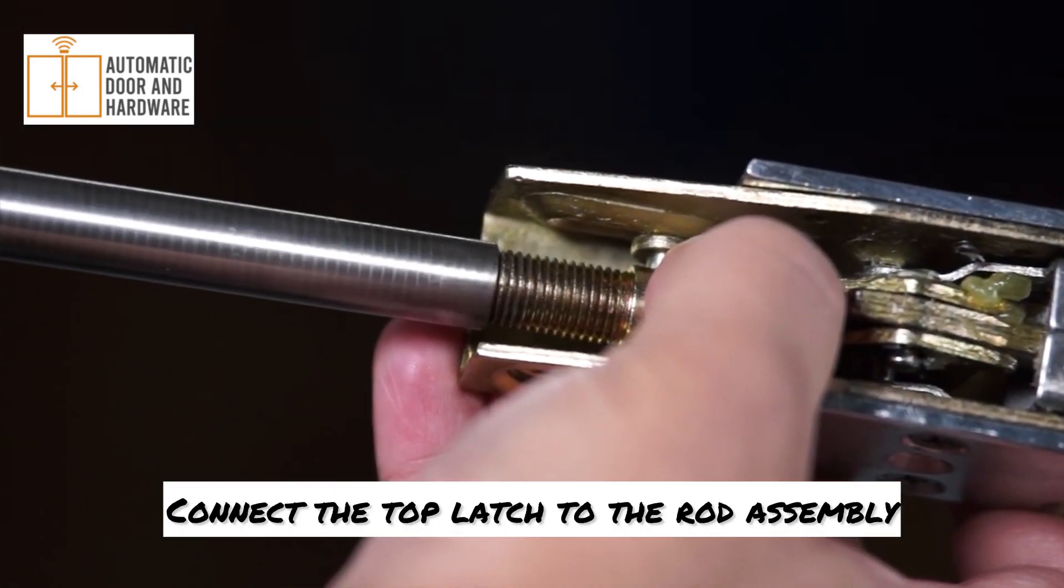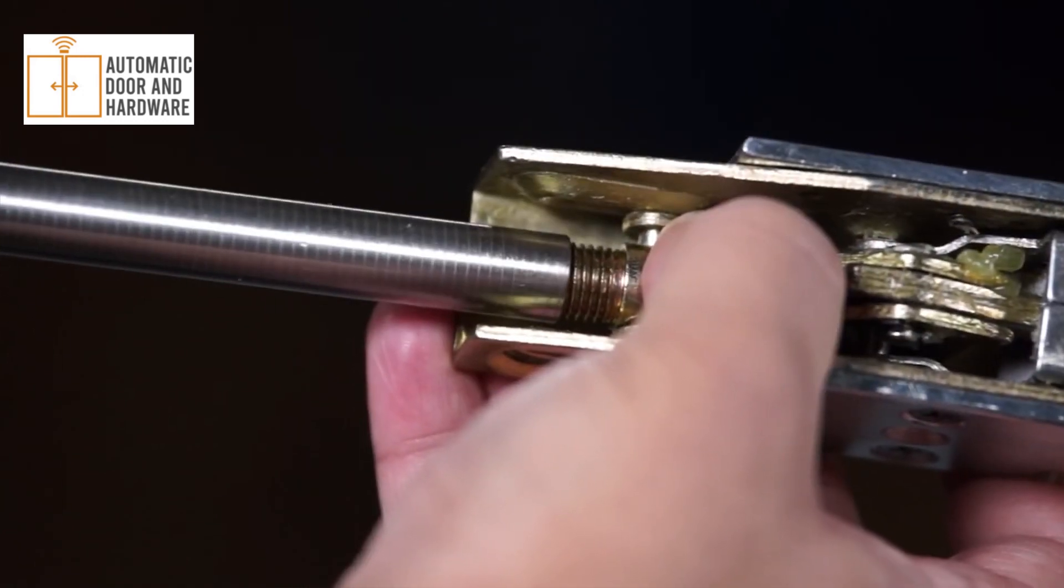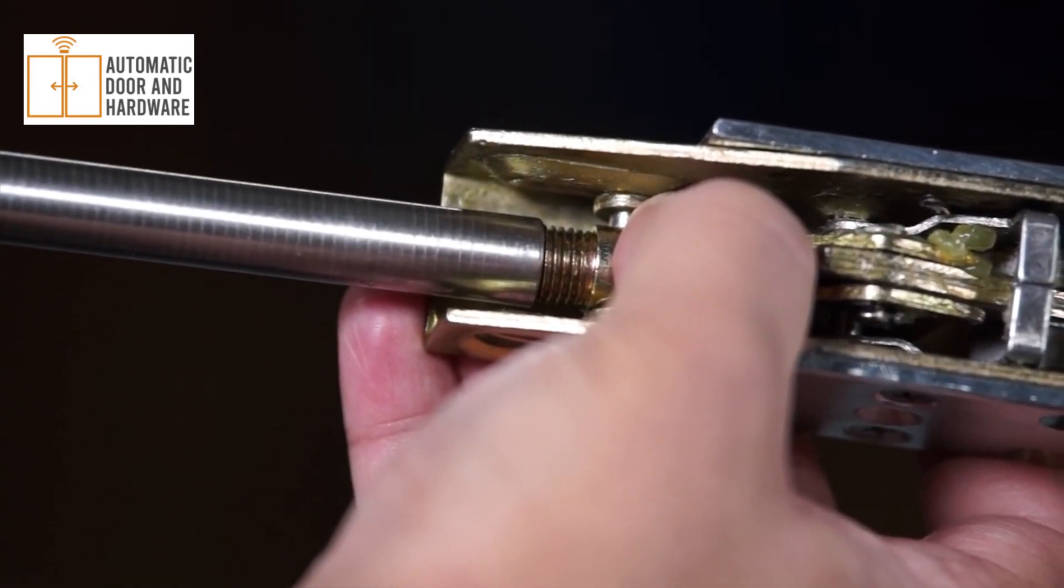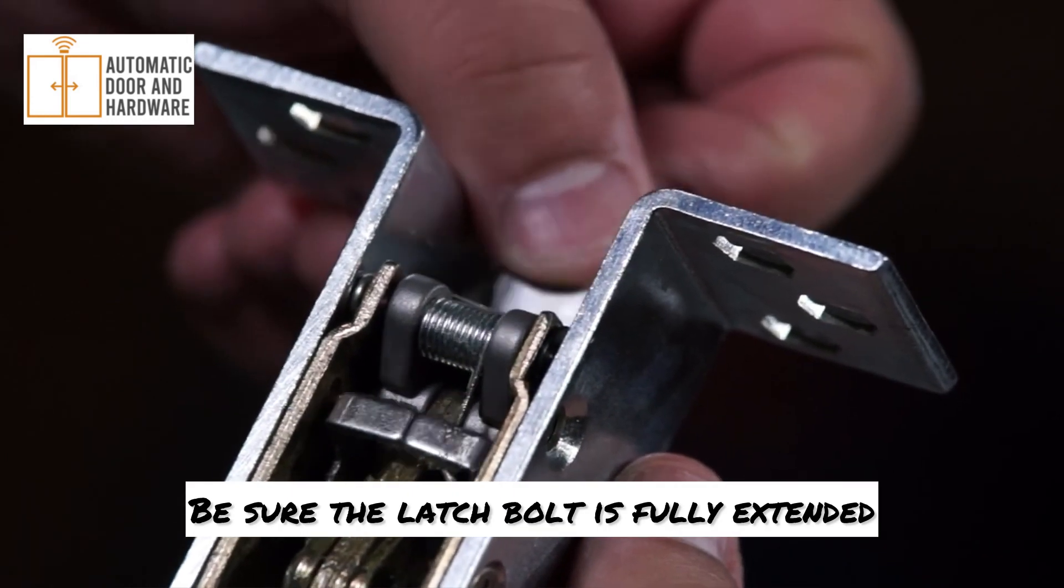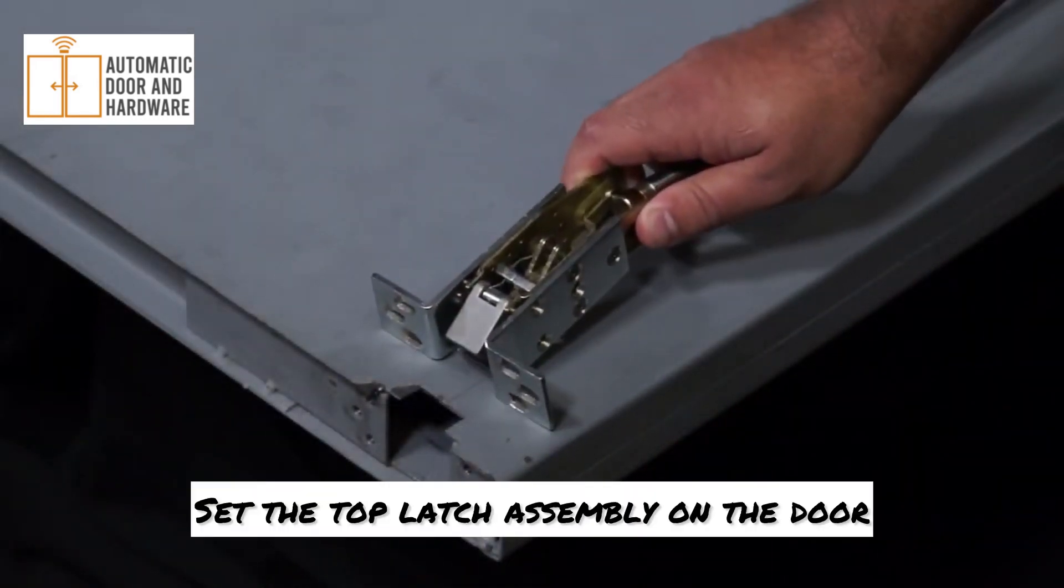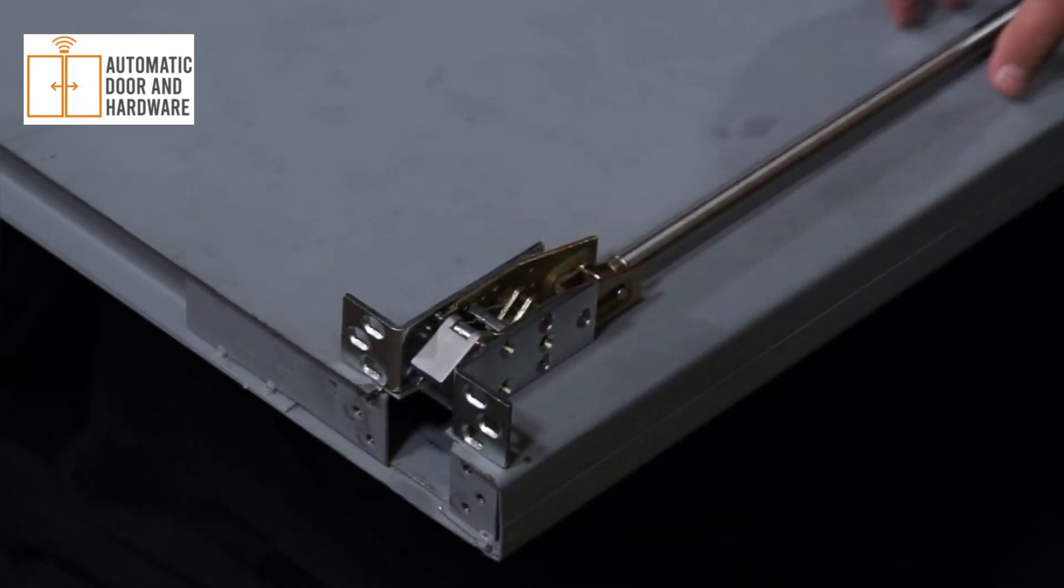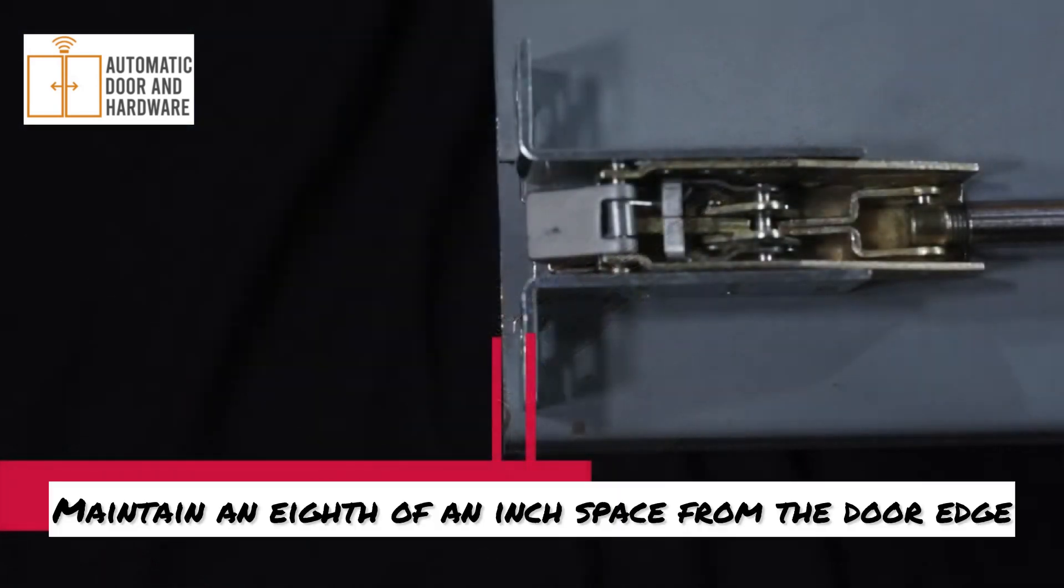Connect the top latch to the rod assembly. Be sure the latch bolt is fully extended. Set the top latch assembly on the door and move it into place. Maintain an eighth of an inch space from the door edge.